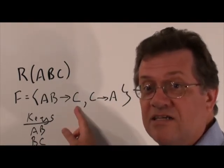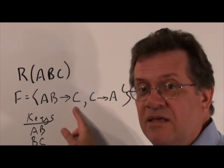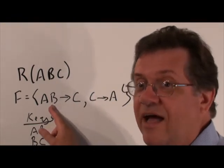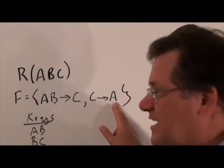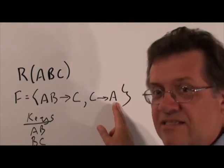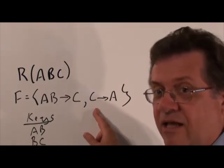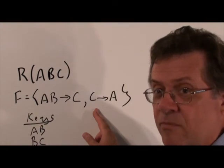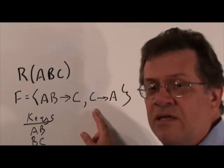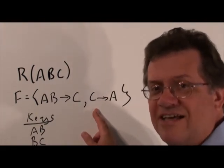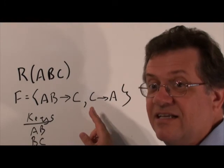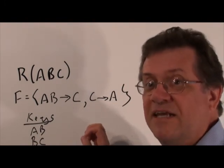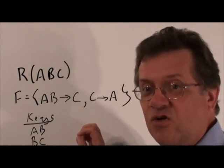If we look at AB→C, the right-hand side is prime but the left-hand side is a super key, so we're fine. However, for C→A the right-hand side is prime and it doesn't matter whether C is a super key in Third Normal Form — but in Boyce-Codd Normal Form this has to be a super key, and it's not. So this relation is in Third Normal Form but not Boyce-Codd Normal Form.